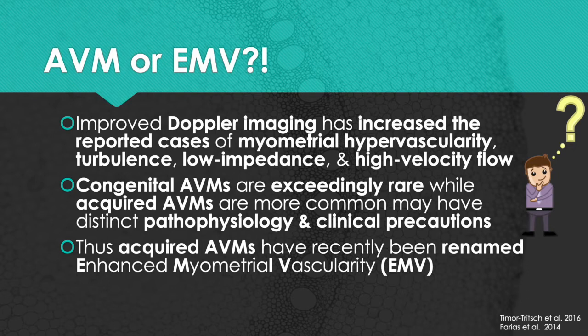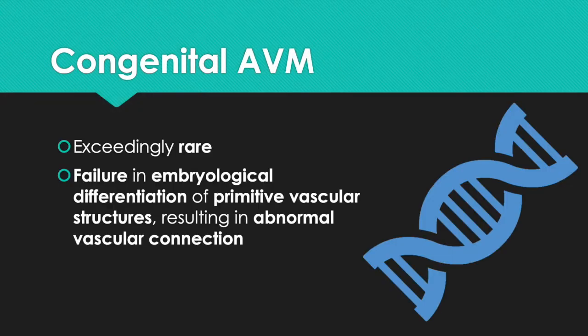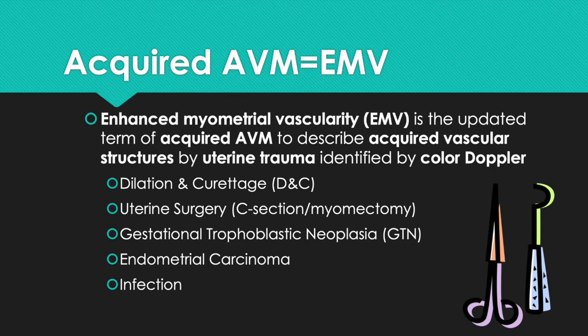Thus, acquired AVMs have recently been renamed Enhanced Myometrial Vascularity, or EMV. Congenital AVMs are exceedingly rare, resulting in abnormal vascular connections, and are the result of failure in embryological differentiation of primitive vascular structures. Enhanced myometrial vascularity is the updated term for acquired AVMs to describe acquired vascular structures by uterine trauma identified by color Doppler. Common uterine insults are dilation and curettage, uterine surgery such as C-section and myomectomy, gestational trophoblastic neoplasia, endometrial carcinoma, and infection.